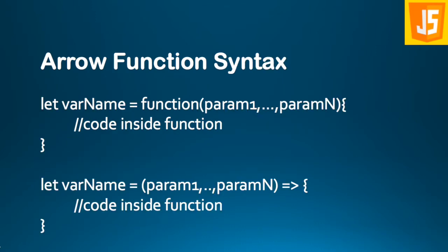It is important to note that arrow functions are limited and can't be used in all situations, so wherever we can use them, we should. For the syntax: just like a function expression uses the function keyword with parameters and a code block, in an arrow function the function keyword is removed and replaced with an arrow sign (=>) after the parameters.